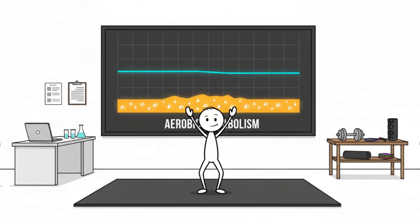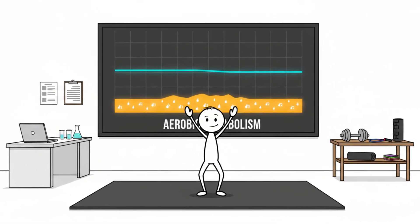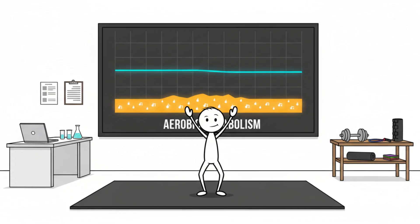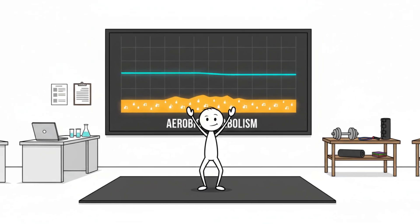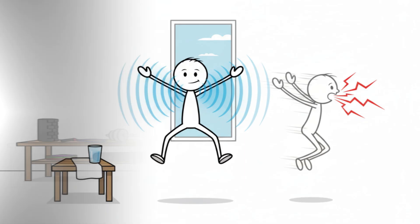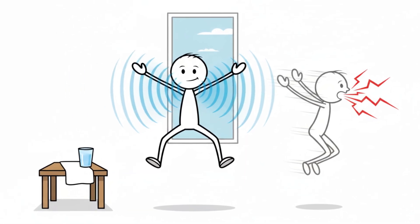Studies on steady-state plyometrics showed that when intensity is moderated, the body leans heavily on aerobic metabolism. Your breathing should deepen gradually, not spike.